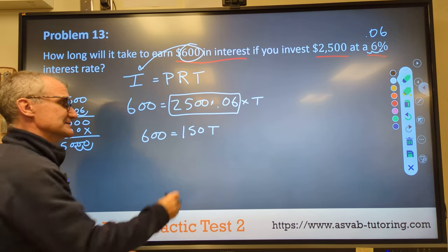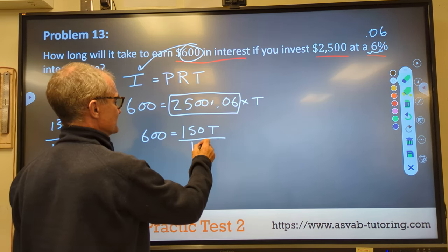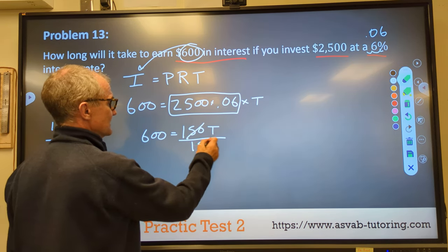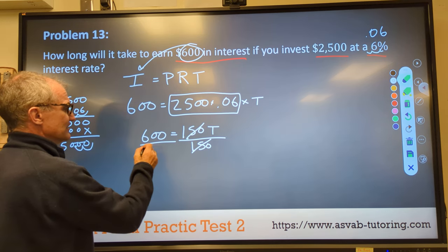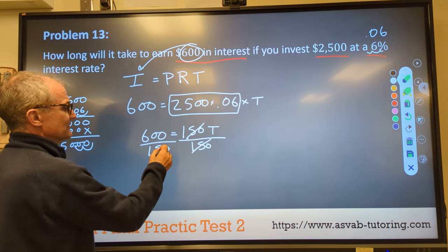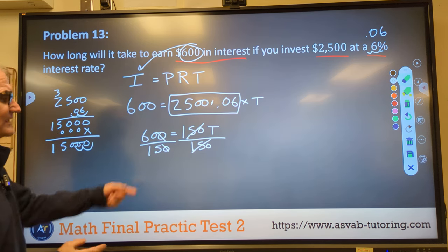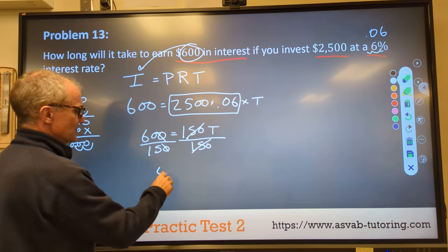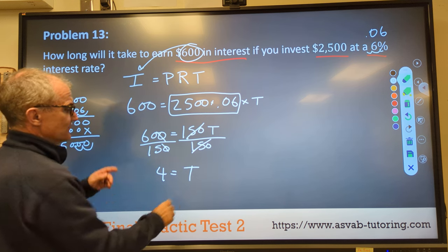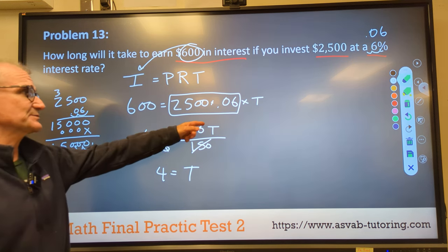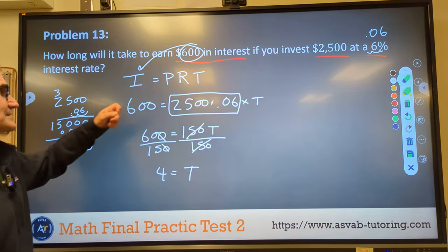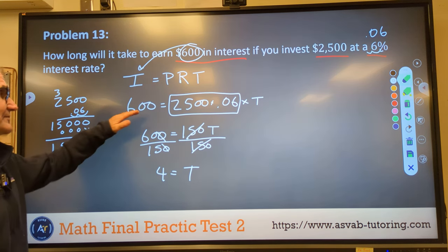I get time by itself. So I divide both sides by 150. Those cancel, gives me T by itself. 600 divided by 150, well, I could knock these zeros off. 60 divided by 15 is 4. So it's going to take me four years at 6% with $2,500 to make $600 in interest. Fair bit of interest, but it's a good interest rate.